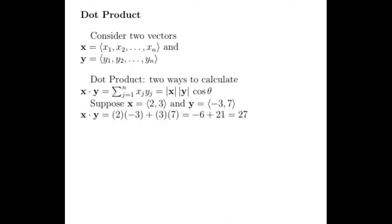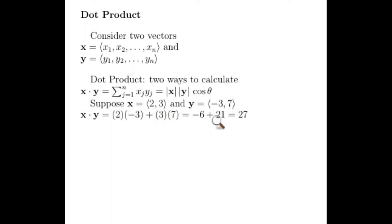In the case that x equals (2, 3) and y equals (-3, 7), the dot product is the sum of the products of the components. So it's going to be 2 times -3 plus 3 times 7, or in other words -6 plus 21, which equals 27.